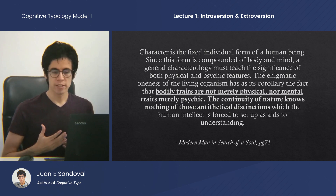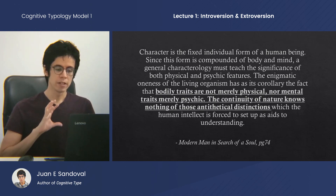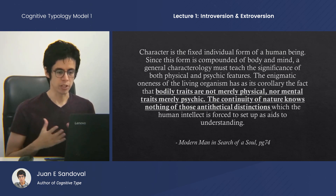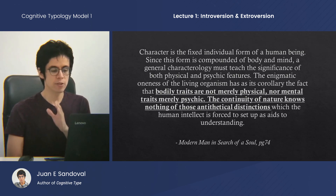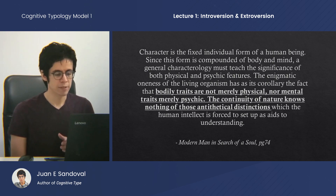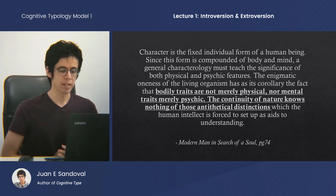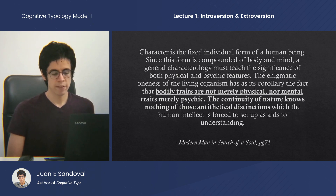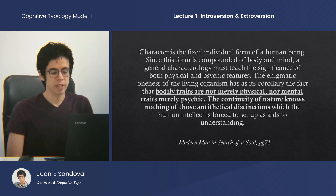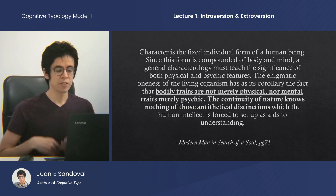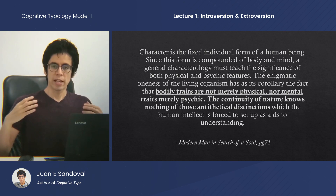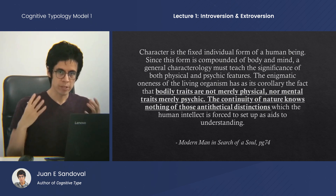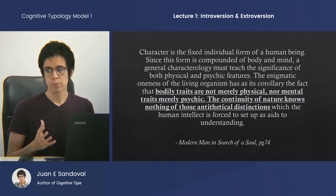Carl Jung says: character is the individual form of a human being. Since this form is compounded of body and mind, a general characterology must teach the significance of both physical and psychic features. The enigmatic oneness of the living organism has as its corollary the fact that bodily traits are not merely physical, nor mental traits merely psychic. The continuity of nature knows nothing of those antithetical distinctions which the human intellect is forced to set up as aids for understanding. This is taken from Modern Man in Search of a Soul. Jung is explaining the distinction between body and mind as something humans contrive of our intellect — an artificial fabrication — because we can't fathom the totality of it in our minds.